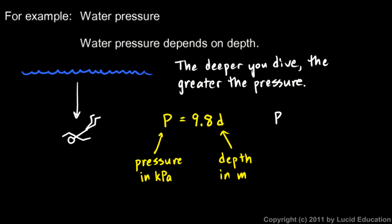You should write that in your notes: P depends on d. The fact that the value we get for P depends on the number we put in for d when we do this calculation. So P depends on d.